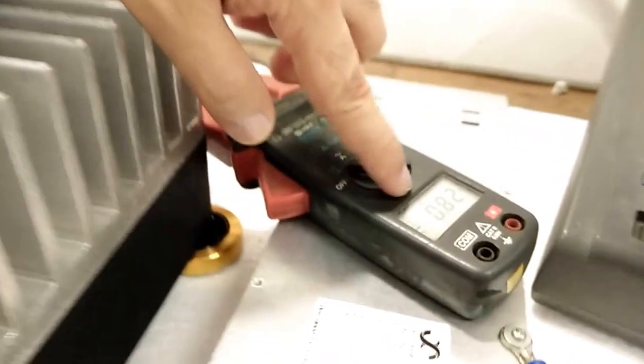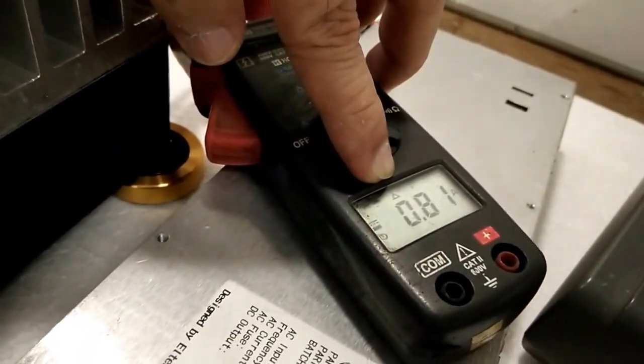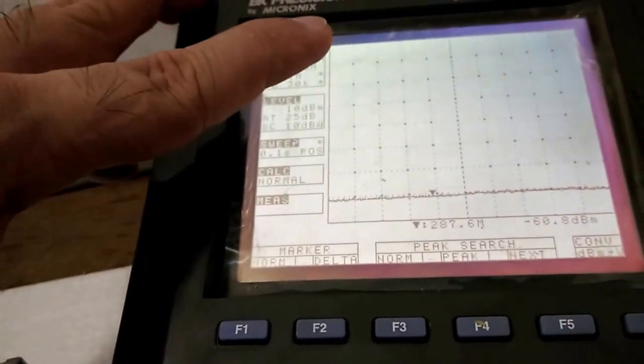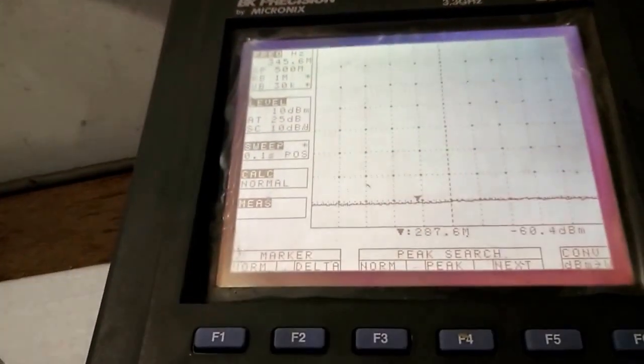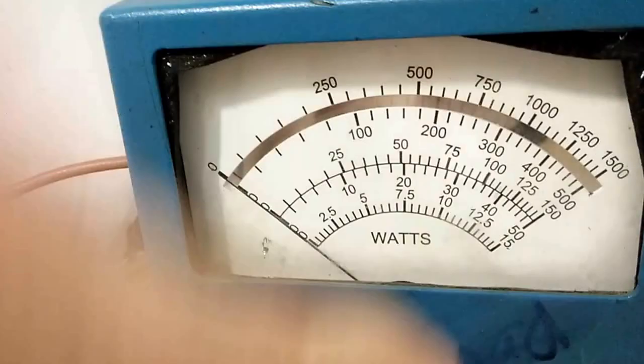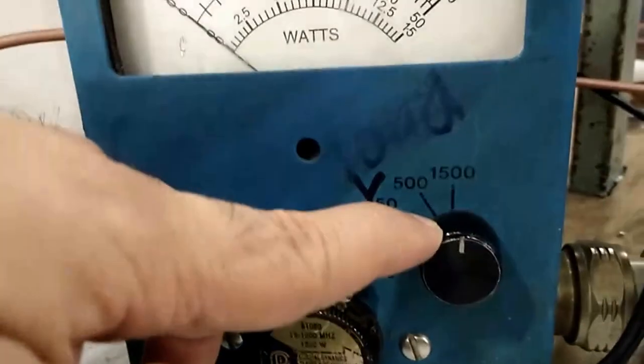This is the current meter. Idle current is 800 milliamps. This is the spectrum analyzer, and this is the power meter with 1500 scale.